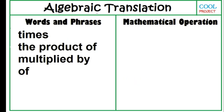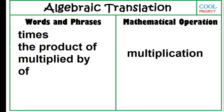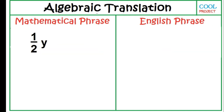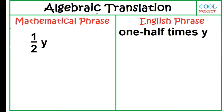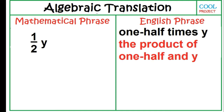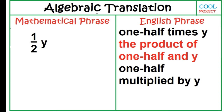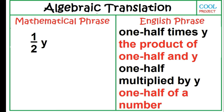These words and phrases — times, the product of, multiplied by, of — use one mathematical operation, which is multiplication. This implies that a single mathematical phrase can be translated to English phrase in many ways. Translate this mathematical phrase to English phrase: 1 half times Y. The product of 1 half and Y. 1 half multiplied by Y. 1 half of a number.